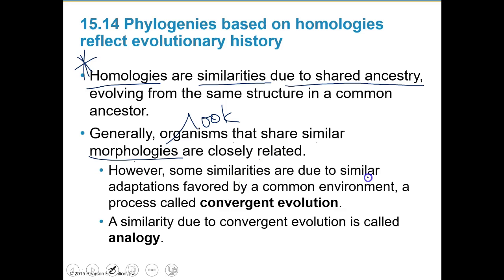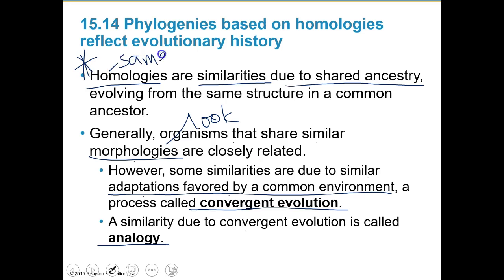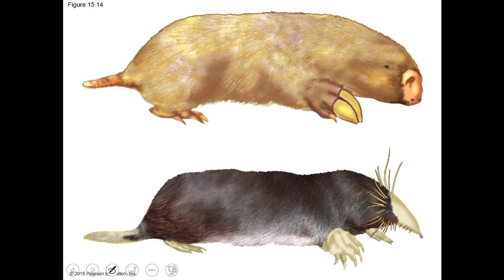However, some similarities are due to similar adaptations favored by a common environment - we call that convergent evolution. A similarity due to convergent evolution is called an analogy, not a homology. A homology implies shared ancestry, while an analogy means they're similar but not really the same structurally. For example, there's a real mole and another digging animal - they have common traits for digging, but they're absolutely different species.